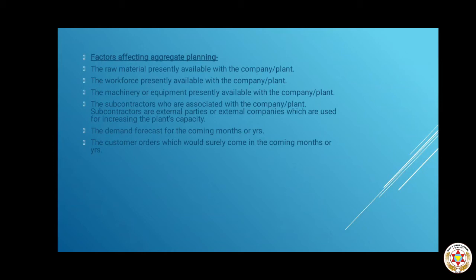The fifth factor is the demand forecast for the coming months. Every production-related plan, including aggregate planning, must consider demand forecasting. Based on the demand forecast, we know how many units will be sold in the coming six months or one year, and on that basis we decide how many units we need to manufacture before selling them.